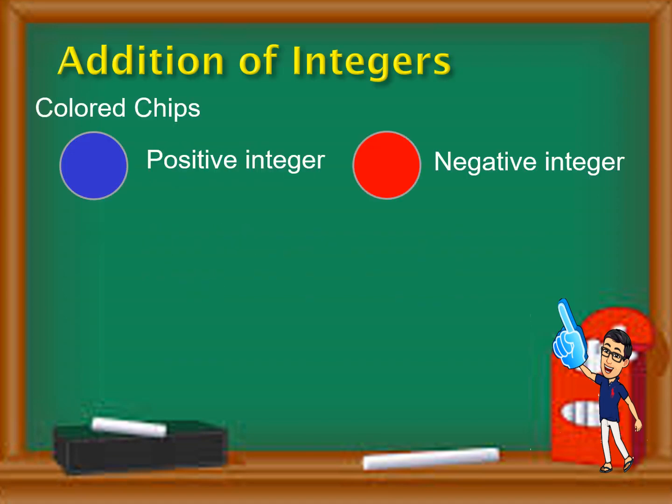How can we use these chips in adding integers? We need to have two colors of chips. We will be using a blue and a red chip. The blue represents the positive integer and the red represents the negative integer. That means every time you see a blue chip, that's positive, and a red chip, that's negative.